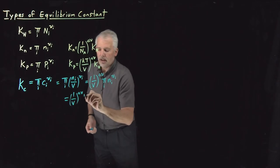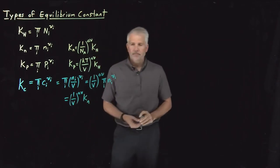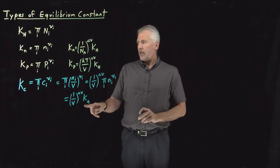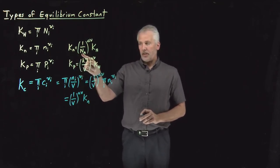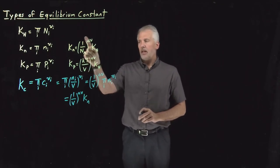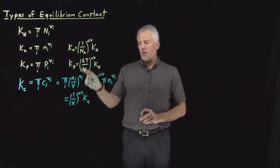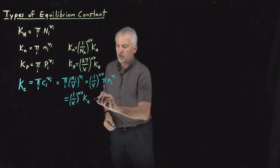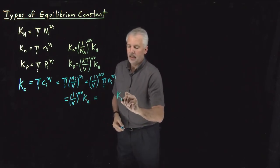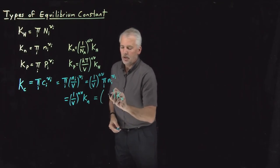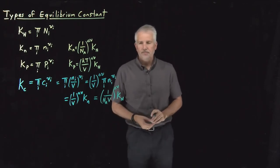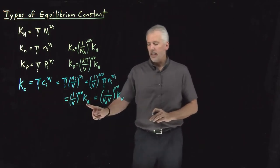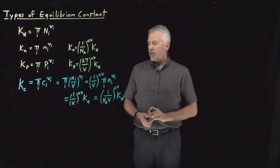Of course, Kn is itself related to KN: Kn equals some factors of Avogadro's number times KN. So if I insert Avogadro's number into the term raised to Δν, I can write Kc as KN times (1/(NA·V))^Δν. Either way, Kc can be related to Kn or to KN by these relationships.